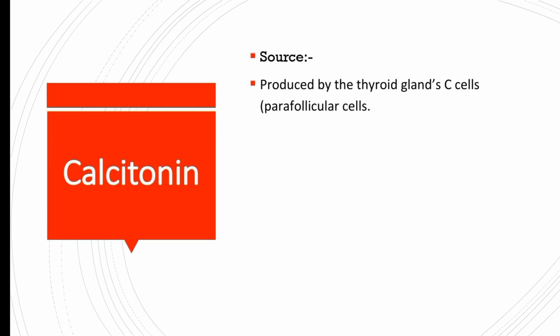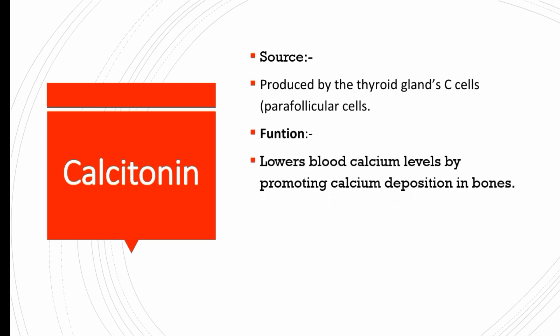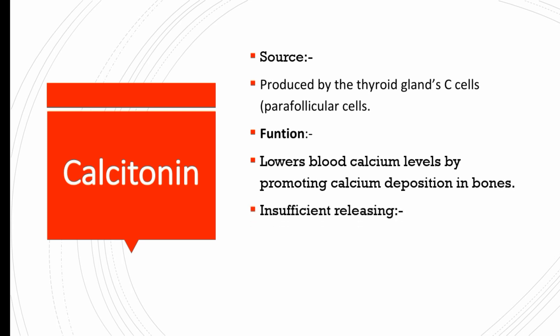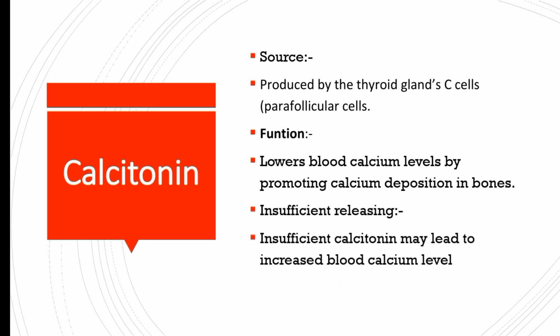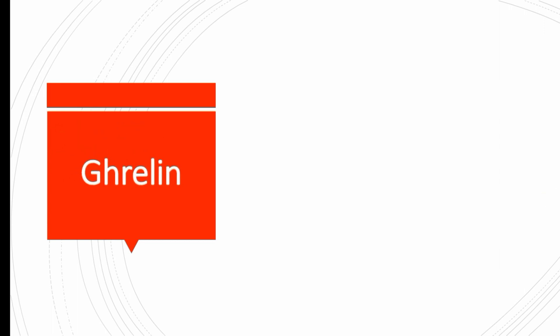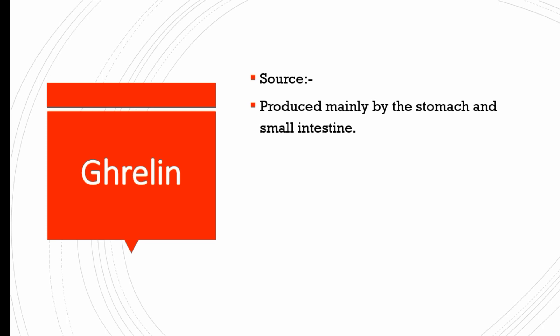Calcitonin is produced by the C-cells of the thyroid gland. Its function is to lower blood calcium levels by promoting calcium deposition in bones. Insufficient calcitonin may lead to increased blood calcium levels, which can cause kidney stones.